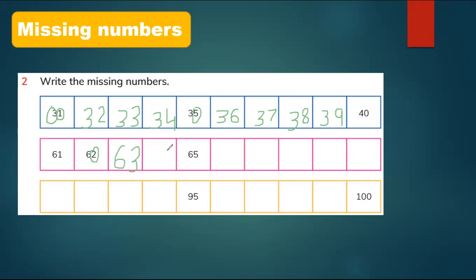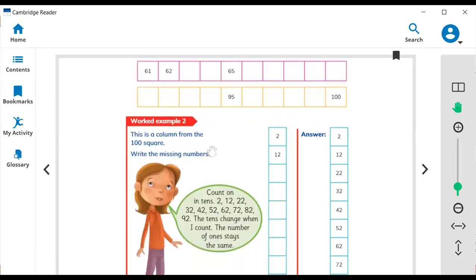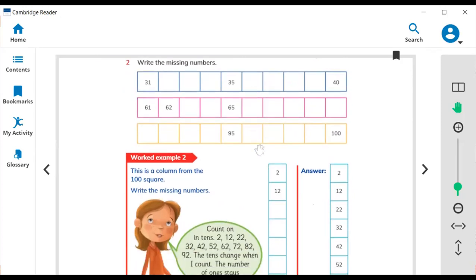Six remains the same. Here is 64, 65 — and you have to write all the numbers after 65. You have to complete this exercise. This is the row where ones change but tens don't, so you have to finish these three exercises.